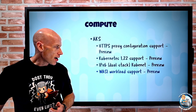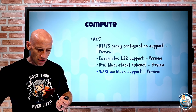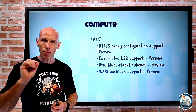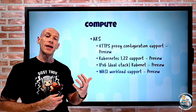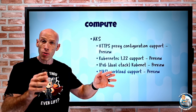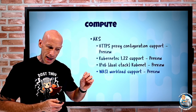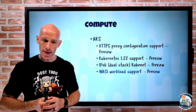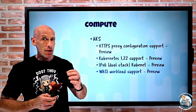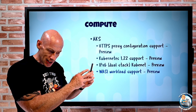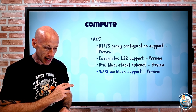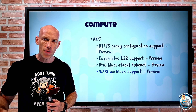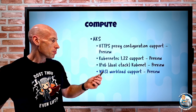AKS now has WASI workload support in preview. This is the WebAssembly System Interface, based around a CNCF project called krustlet. We're used to running things in containers on Kubernetes, which give us that user-mode isolated space. WebAssembly is a new portable open standard for a new binary format that is memory safe with its own isolation built in, but it doesn't run in a container and runs at near-native performance. The krustlet is a new Kubernetes kubelet that enables running these workloads, so you can now create WASI node pools on your AKS service. This is in preview.